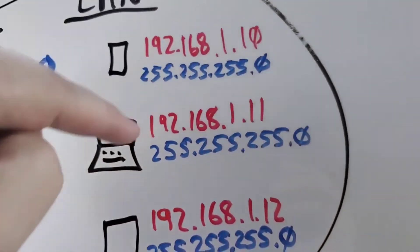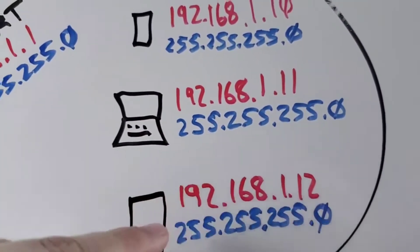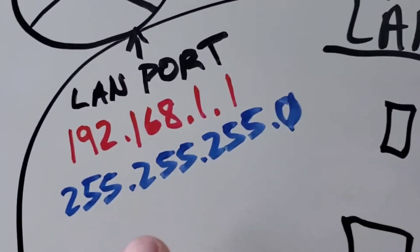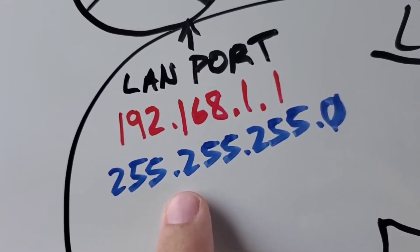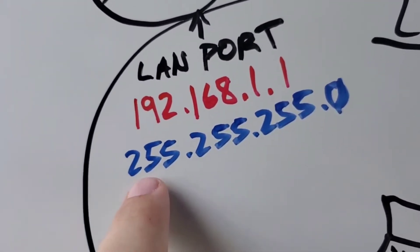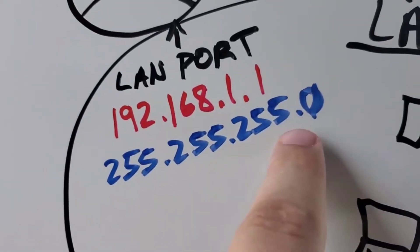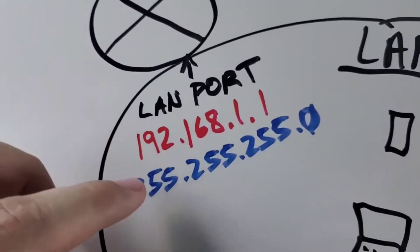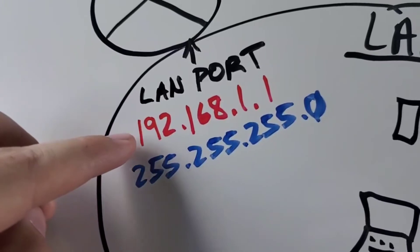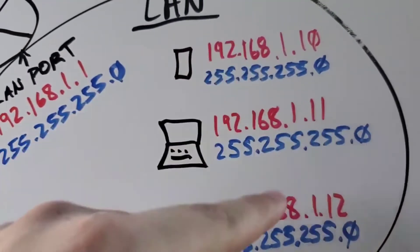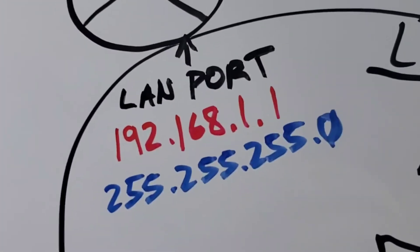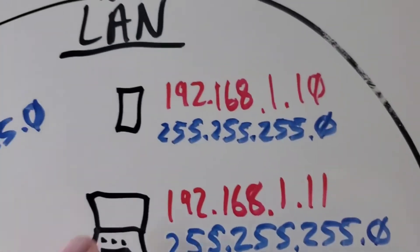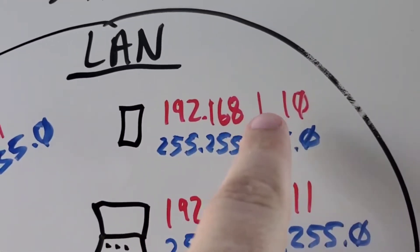This other phone also needs to be unique, so it's going to take 192.168.1.12. The first three octets are the same on every device because that represents the network. We know that 192.168.1 is the network because on the router, 255.255.255 represents the network portion of the IP address. So if your router shows something different than 192.168.1, then all your devices also need to match that network ID part.